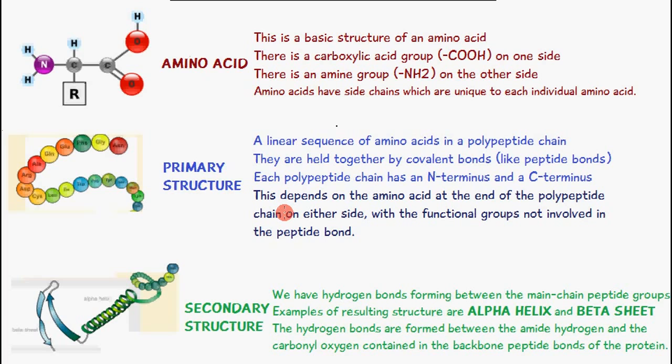If you imagine a long chain of amino acids, one's going to have an N-terminal and the other will have a C-terminal. On one end of the chain we'll have this amine group sticking out, and on the other end we'll have this carboxylic acid group sticking out. That is the N and C terminal, and that depends on which amino acid is at the end of the polypeptide chain.